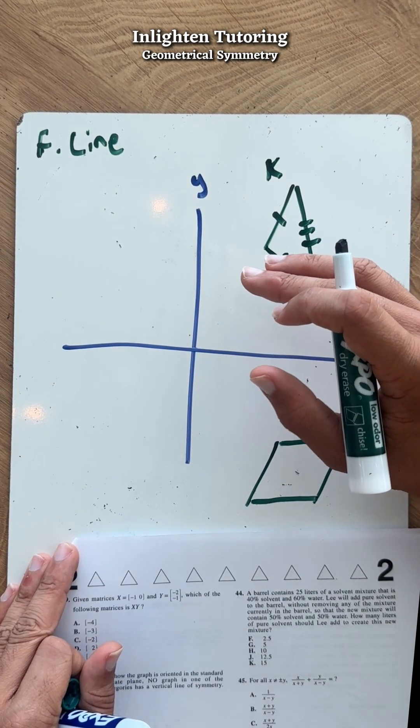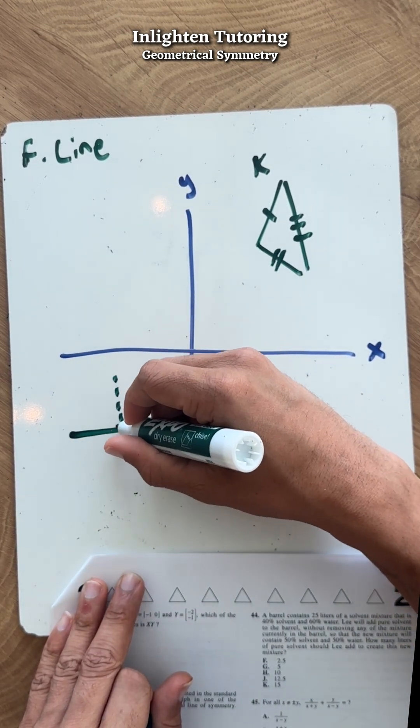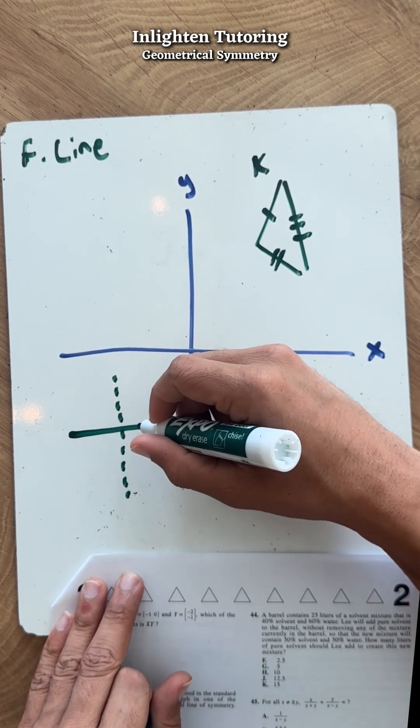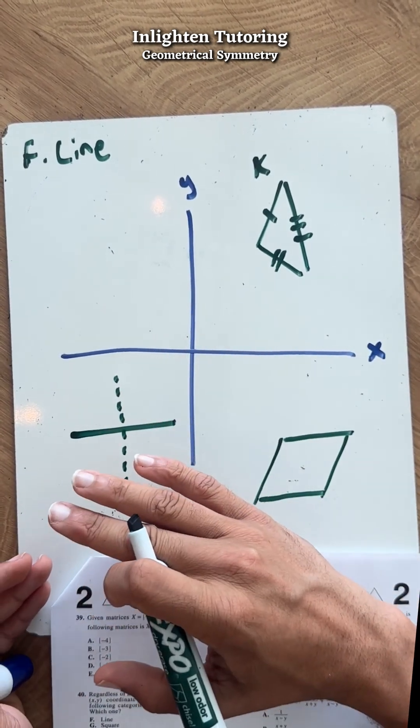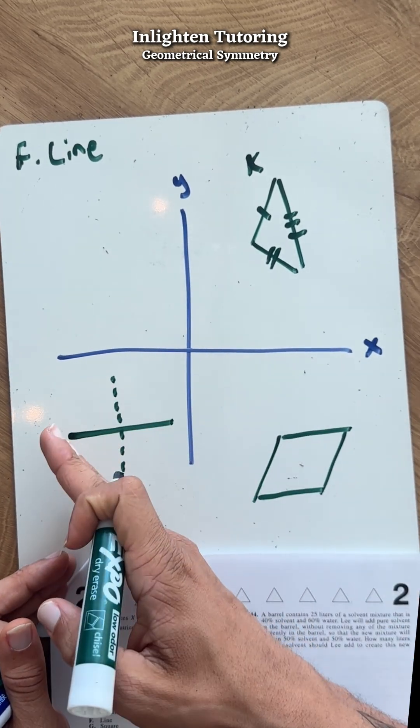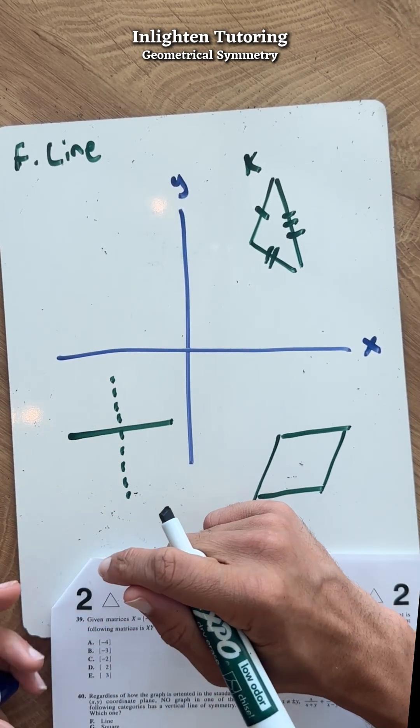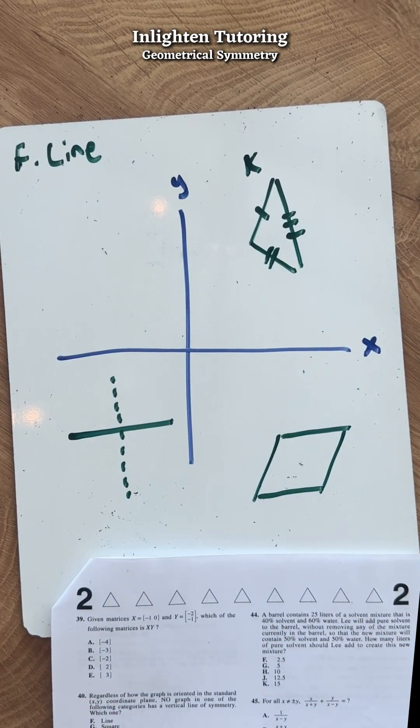What does vertical line of symmetry mean? It means I can cut it and fold it over that cut, and both sides would match up equally. So if I take a line and cut it, I can fold it over exactly. If I fold it over, it would have a line of symmetry - it would be symmetrical.